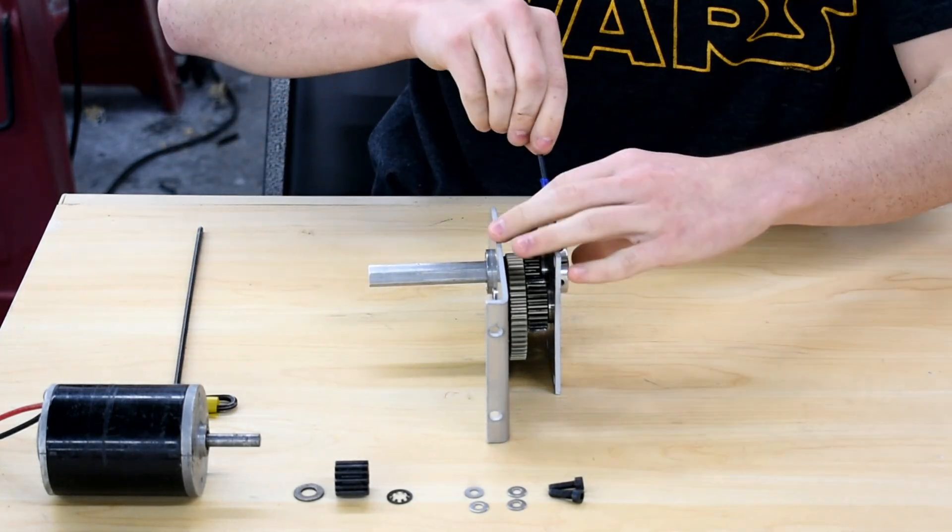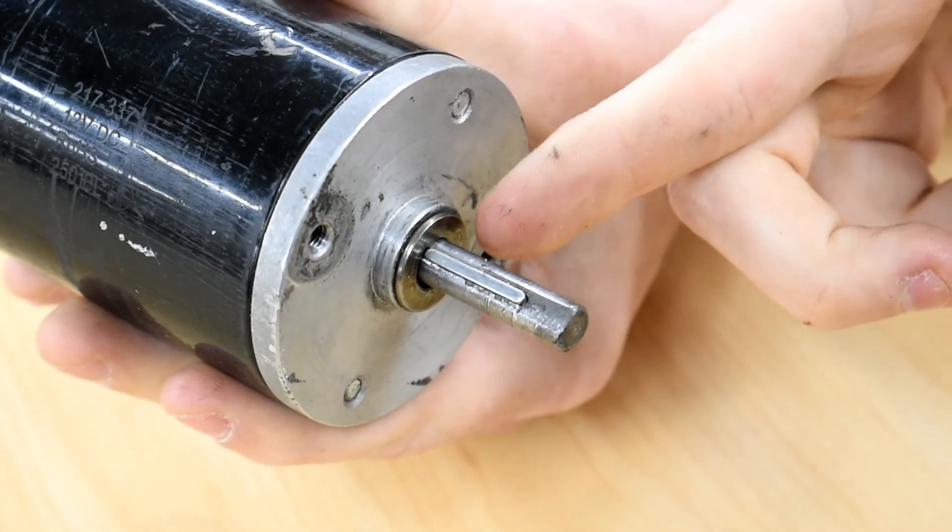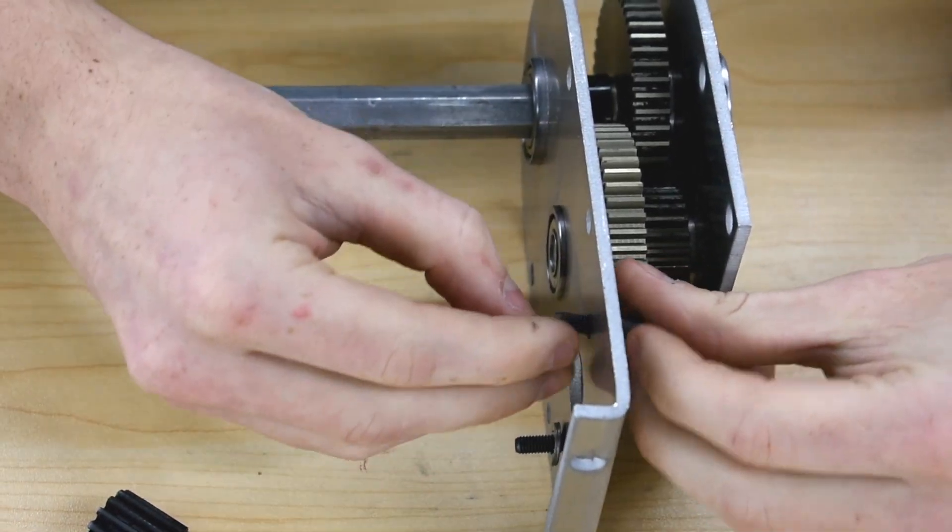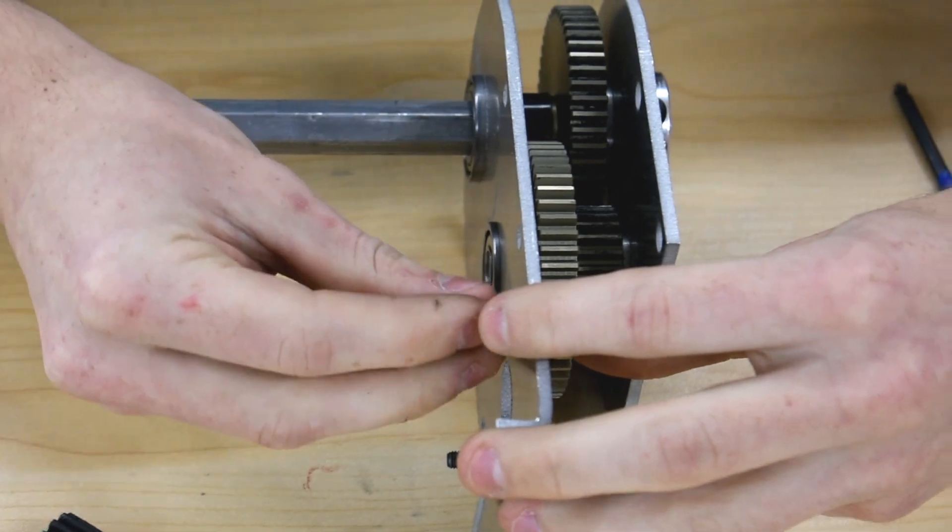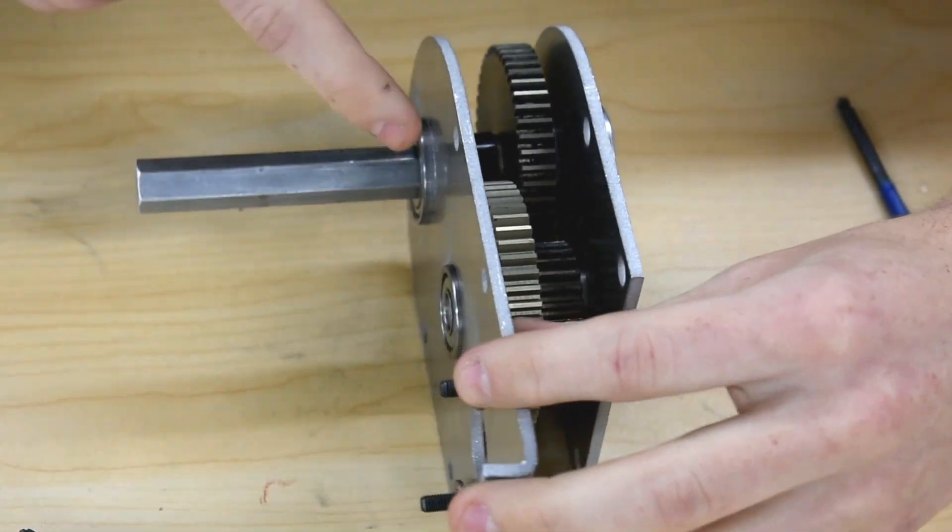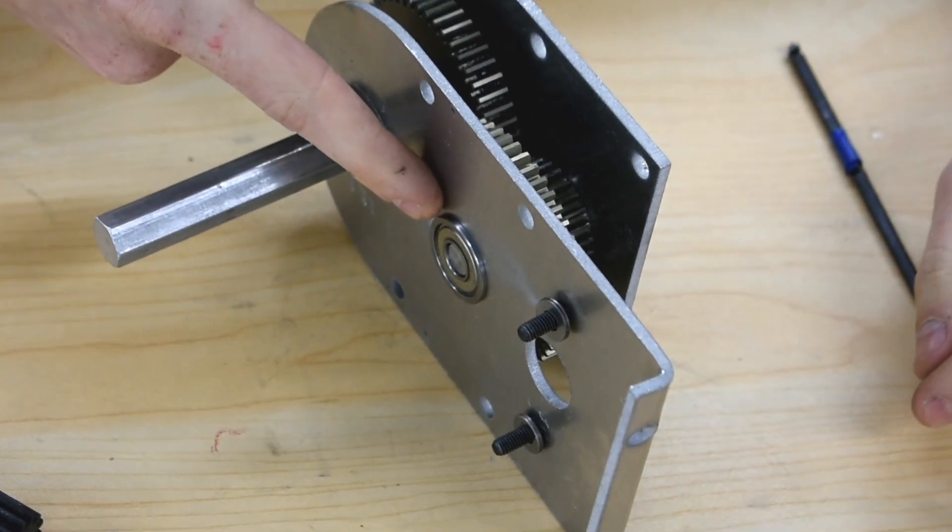Add a thrust washer to the CIM motor and insert the keyway. Mount the CIM motor using 5/8 inch 10-32 screws. Washers are required for spacers because the small bearing by the motor mount protrudes past the aluminum plate.